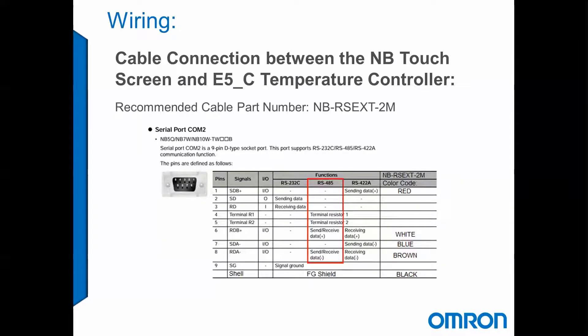The recommended cable part number is the NB-RSEXT-2M. This is going to be a 2 meter cable. One end of the cable will have a DB9 connection, the other end will be flying leads. The main pins we're going to be looking at are pin 6, which is our RDB+, that's going to be our white wire, and pin 8, which is our RDA-, that will be our brown wire.